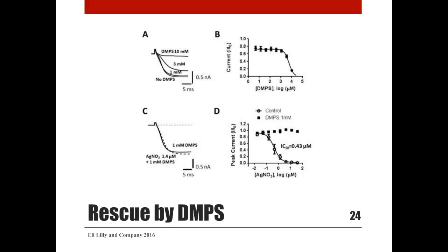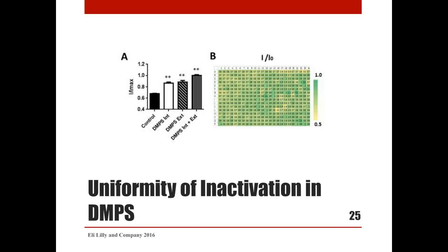We explored the potential for chelation of silver by DMPS, a heavy metal chelator approved for clinical use in cases of heavy metal poisoning. It has high affinity for silver and relatively low affinity for calcium and magnesium. At high concentration, DMPS applied extracellularly blocked N-type calcium currents with approximately 5 millimolar IC50. However, addition of 1 millimolar DMPS to the buffer completely prevented block of calcium currents by silver nitrate without significant effect on N-type calcium currents themselves. Adding DMPS to our solutions reversed the loss of current over the ground electrodes and was most effective when added to both internal and external solution, resulting in uniform distribution of calcium currents as shown in the heat map.